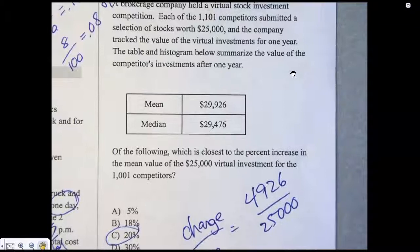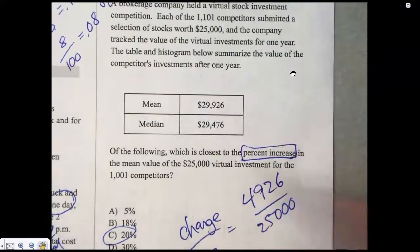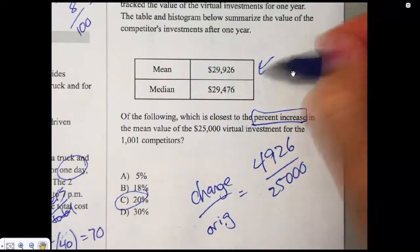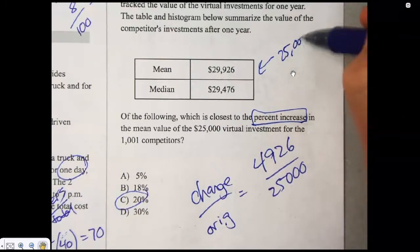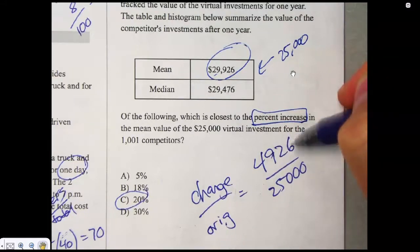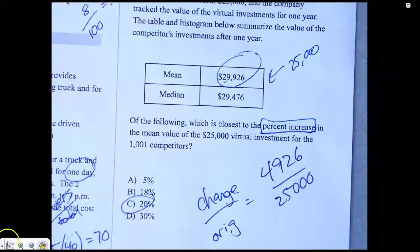Number 10, so which of the following is the closest to percent increase. So that's percent change. So we're looking for the change divided by the original. The change, well, we started off with 25,000 and ended up here. So we got the difference of that 4926 divided by the original. And that gets me 0.2 or 20%. Peace.